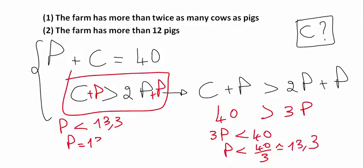So P could be equal to 13. In this case, the number of cows is equal to 27 using this equation. P could be equal to 12 and C could be equal to 28. So now I already have two examples, each one giving me a different number of cows. So the first statement is not sufficient in order to compute the number of cows.